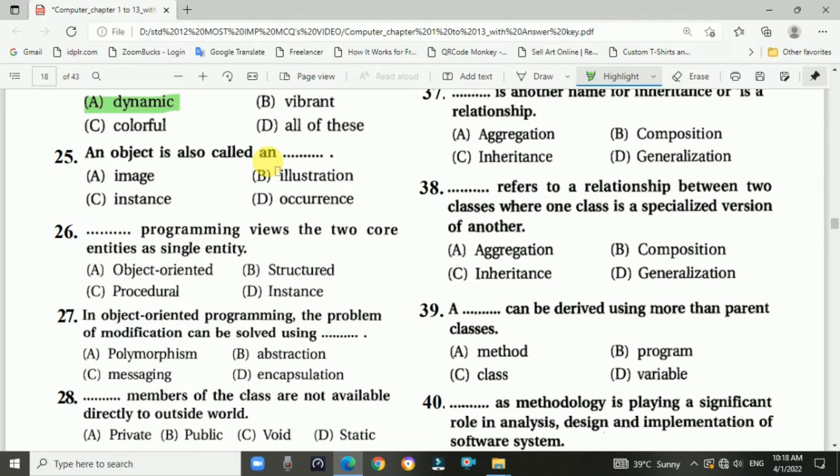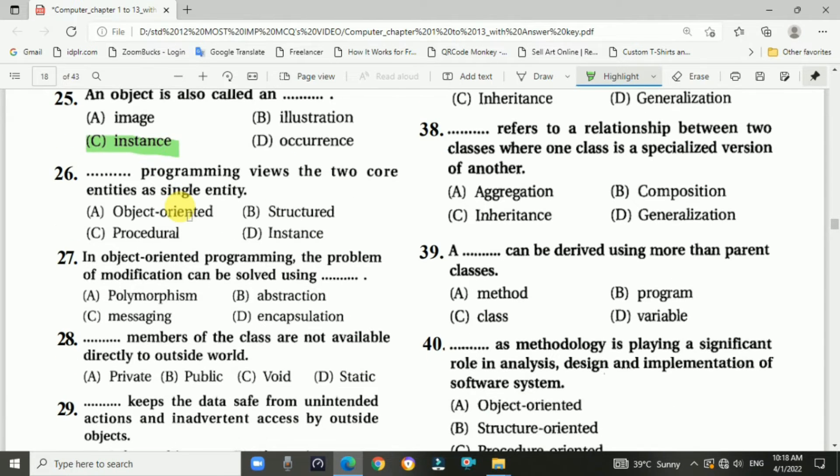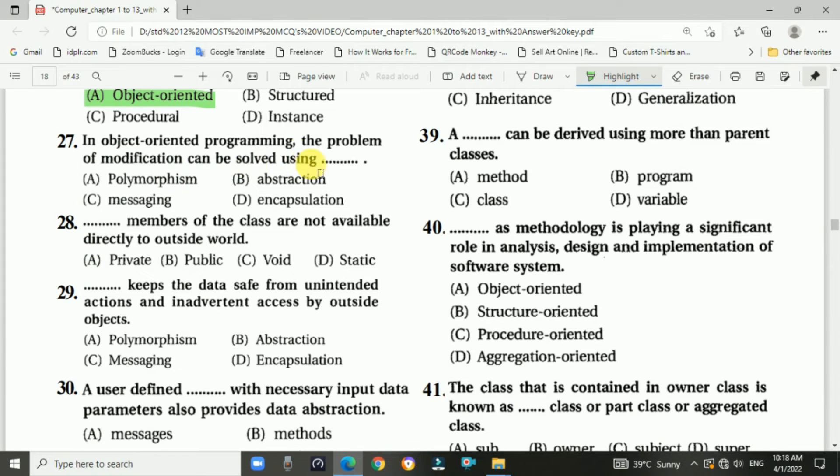An object is also known as instance. Question number twenty-six: Blank programming viewed two core entities as a single entity. Answer is A, object-oriented programming. Question number twenty-seven: In object-oriented programming, the problem of modifications can be solved by using encapsulation.